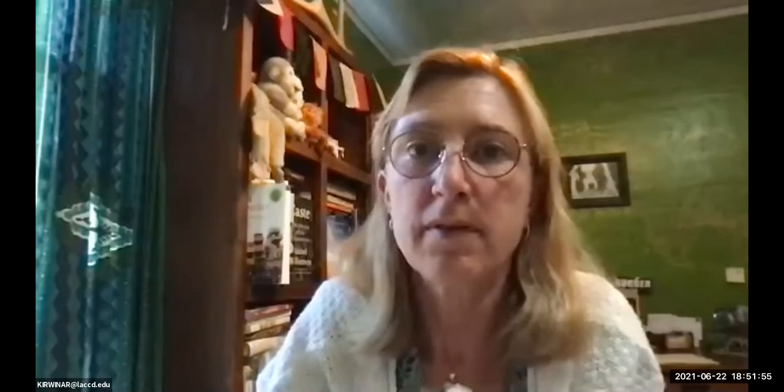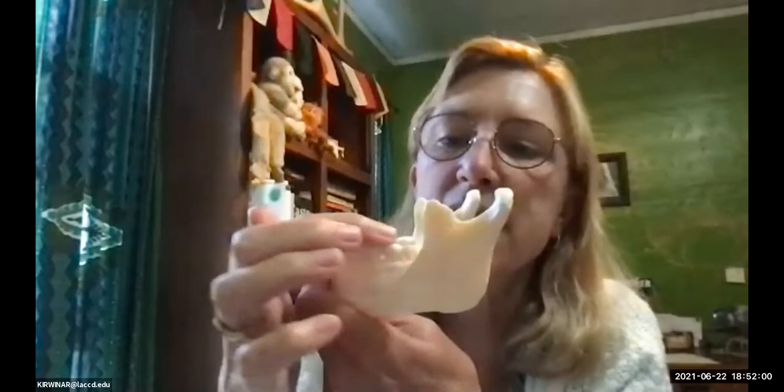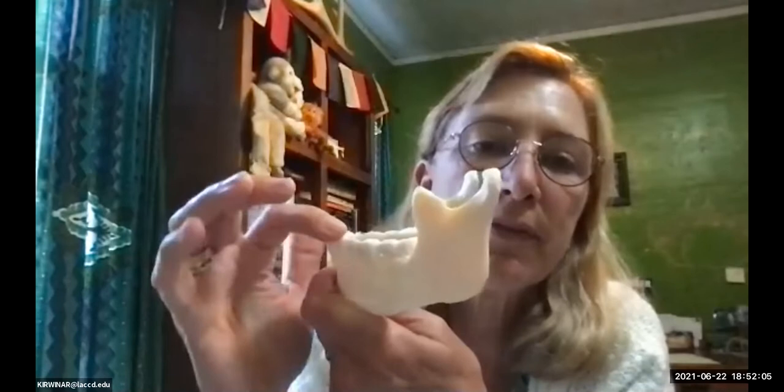If I hold up the mandible, look — the teeth are all nicely even. So what does that tell you? What are we adapted to eat? What other adaptations do we have?